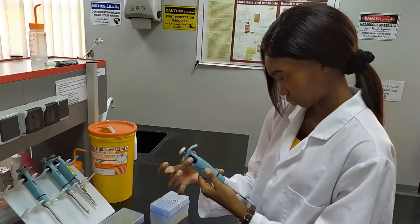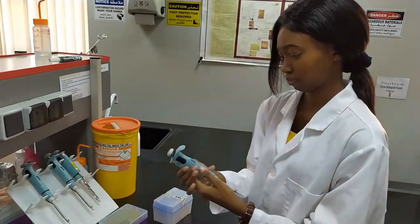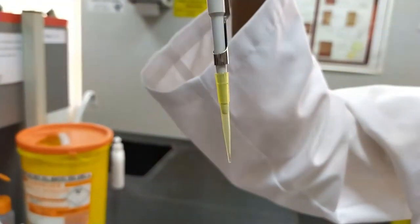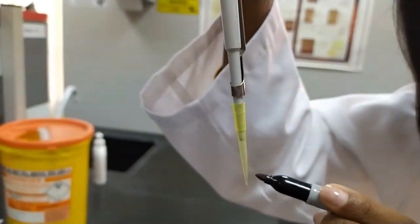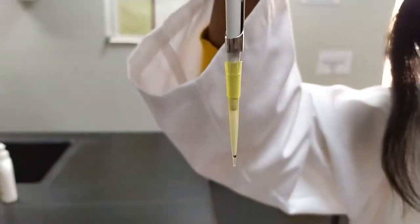Next we're going to have her change the volume to the lowest setting on a P20. So we're going to set it to two microliters. And she's first going to use correct technique to help her mark the outside of the tip to show where two microliters should be on that tip.